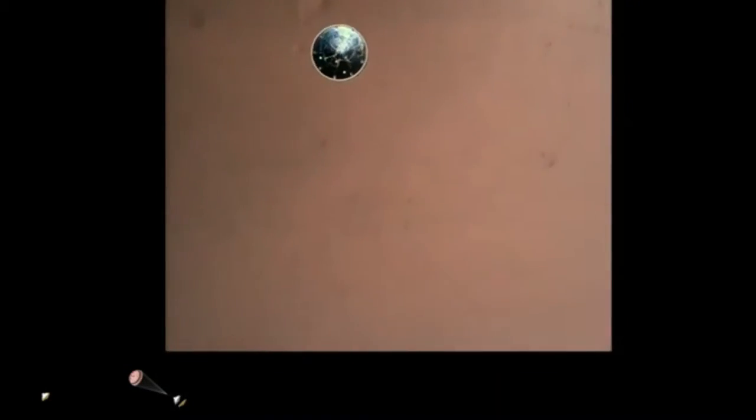Heat shield separated. Perseverance has now slowed to subsonic speeds, and the heat shield has been separated. This allows both the radar and the cameras to get their first look at the surface. Current velocity is 145 meters per second at an altitude of about 9.5 kilometers above the surface.